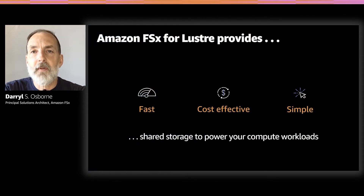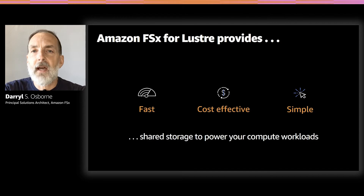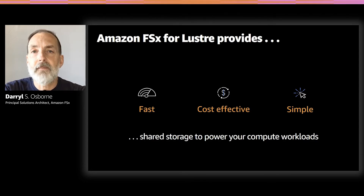We've designed FSx for Lustre to provide fast, simple, and cost-effective shared storage to power high-performance workloads. FSx for Lustre is able to scale up to hundreds of gigabytes per second of throughput and millions of IOPS while maintaining sub-millisecond latencies. It also provides concurrent access from hundreds of thousands of compute cores to a single file system. In just minutes, you can spin up an FSx for Lustre file system using the FSx console or API, and as a fully managed service, we take care of regular security and maintenance updates.